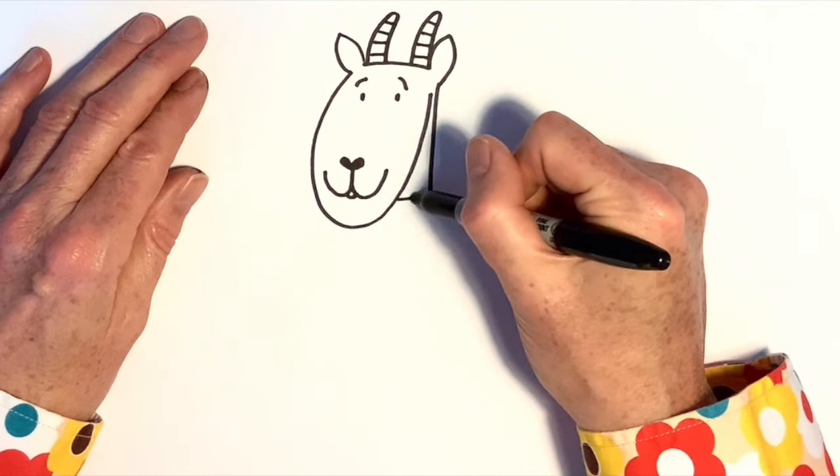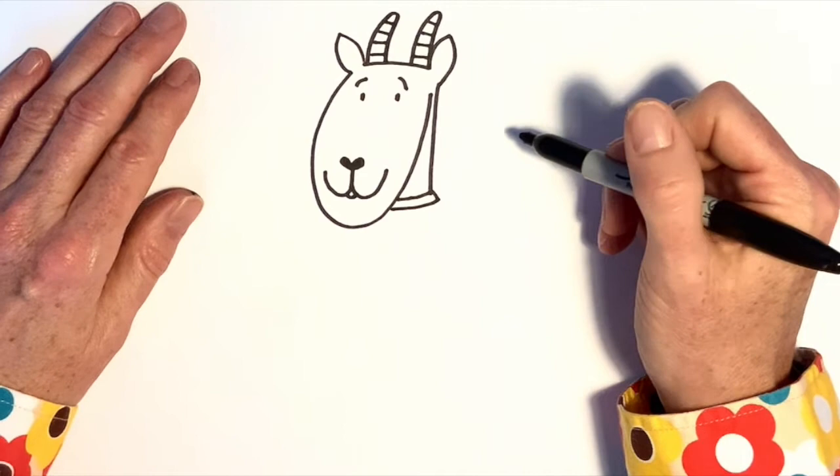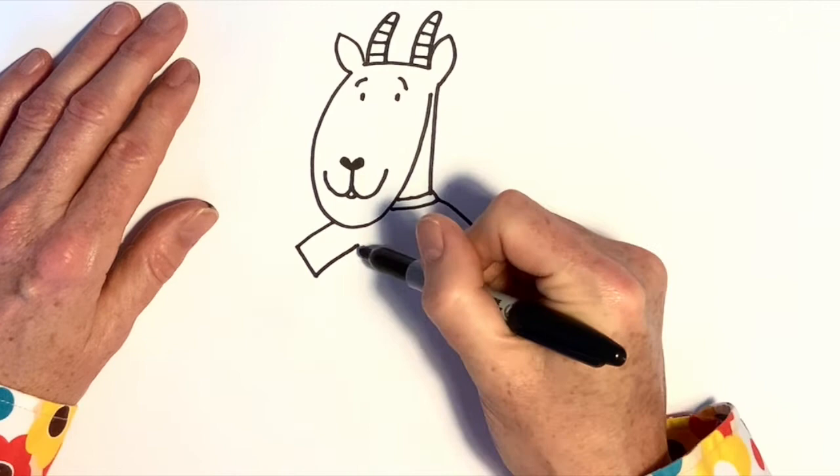Now I'm going to draw the collar of the billy goat's t-shirt. And draw one sleeve over here, one sleeve over here. And then draw the rest of the t-shirt like that.